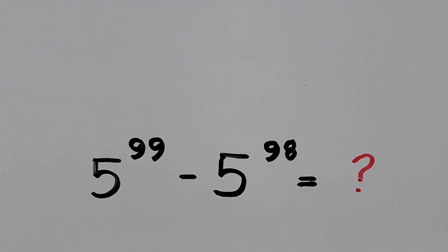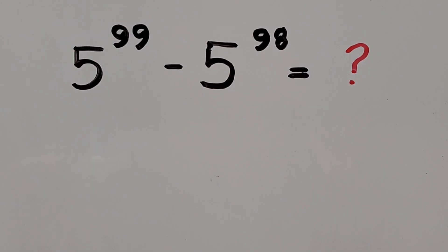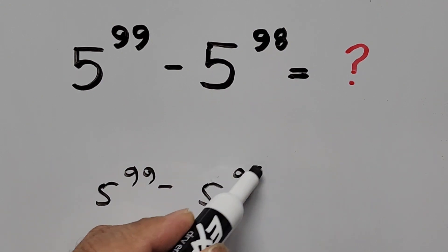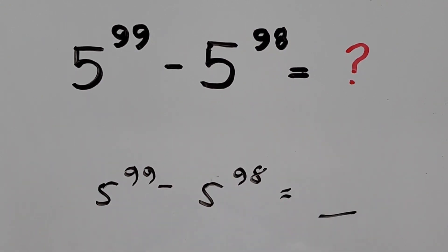So we'll be solving the difference without using a calculator. How are we going to solve it? Alright, so 5 to the power of 99 minus 5 to the power of 98 equals blank.